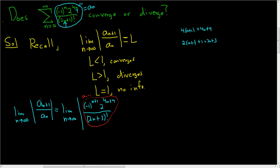We have to take a_sub_(n+1) and divide it by a_sub_n. When you divide by a_sub_n, you really just multiply by the reciprocal of a_sub_n. So it's (2n+1) factorial over negative 1 to the n times 2 to the 4n. The red circle is a_sub_(n+1) — we got that by replacing all of the n's with n+1's.